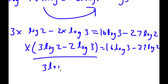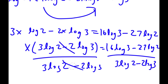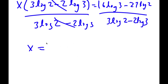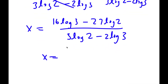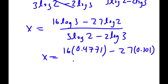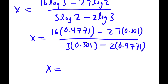Now all I have to do is divide both sides by 3 log 2 minus 2 log 3. These cancel out, and I have x is equal to 16 log 3 minus 27 log 2 all over 3 log 2 minus 2 log 3. Substituting values — 16 times 0.4771 minus 27 times 0.301 over 3 times 0.301 minus 2 times 0.4771 — the answer for x ends up being 9.6367.